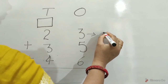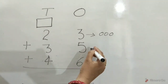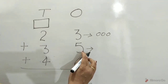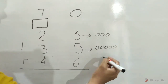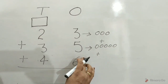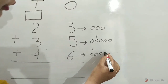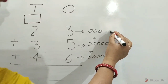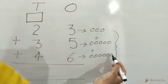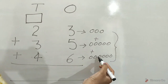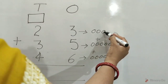Children, draw 3 circles in front of 3 ones, draw 5 circles in front of 5 ones: 1, 2, 3, 4, 5, plus draw 6 circles in front of 6 ones: 1, 2, 3, 4, 5, 6. Now count all the circles together. Start to count: 1, 2, 3, 4, 5, 6, 7, 8, 9, 10, 11, 12, 13, 14.